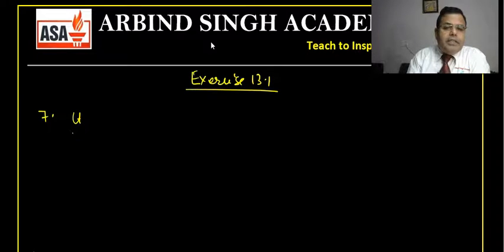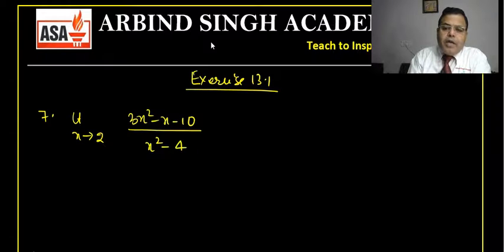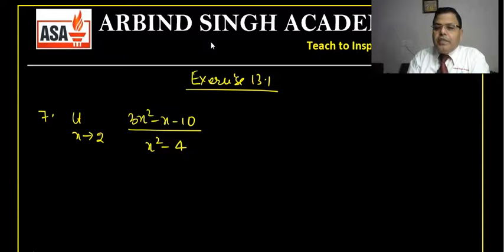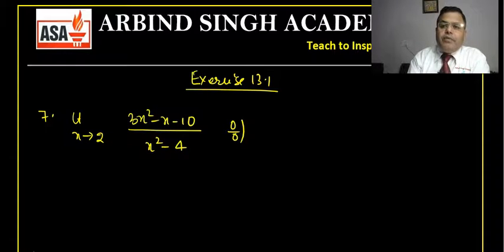Question 7: limit as x tends to 2 of (3x² − x − 10) divided by (x² − 4). If I put x = 2, then 3(4) − 2 − 10 = 0 and the denominator is also 0. So this is in the form 0/0 and you can't substitute the value of the limit directly.